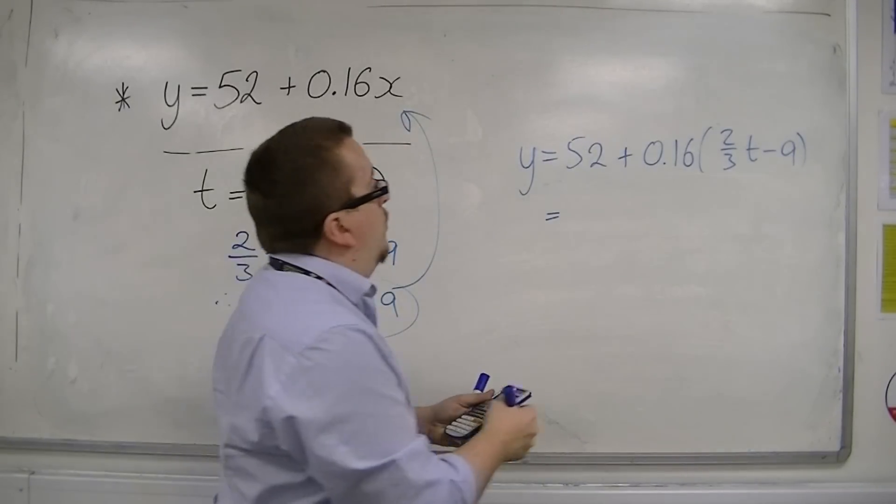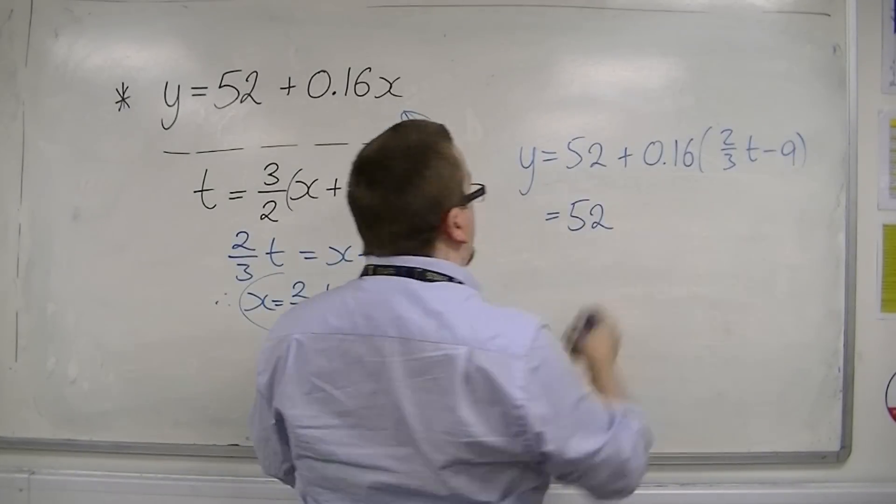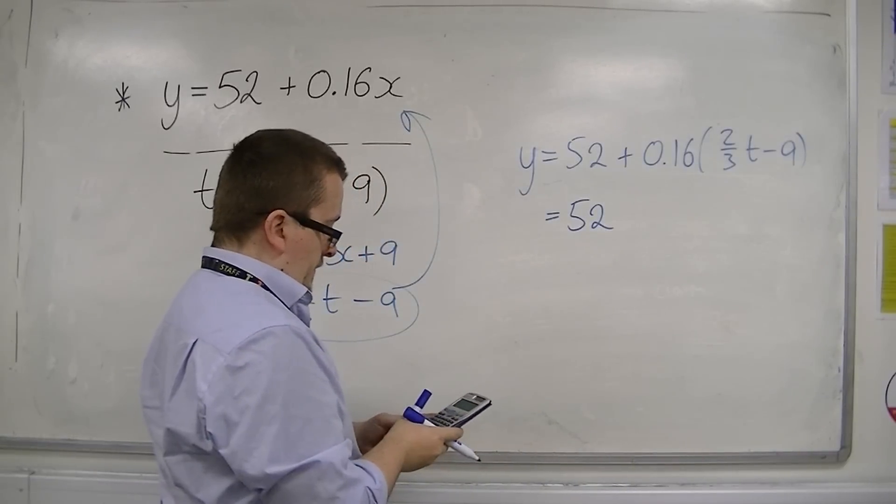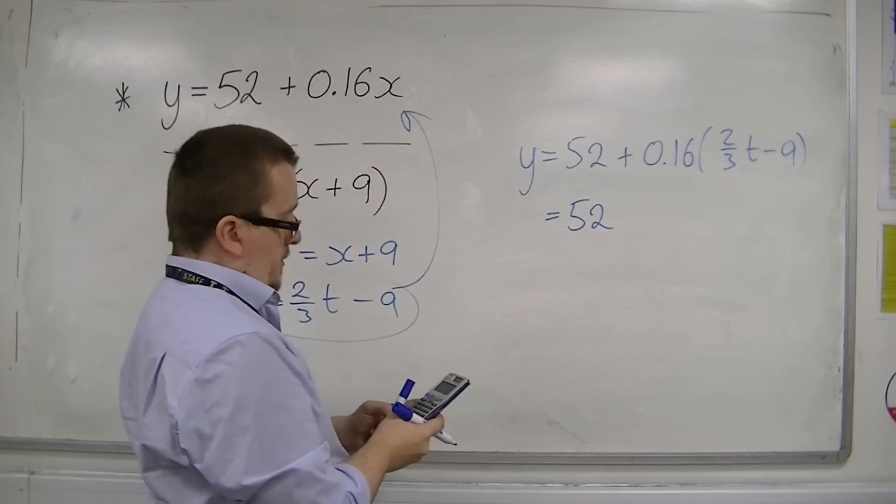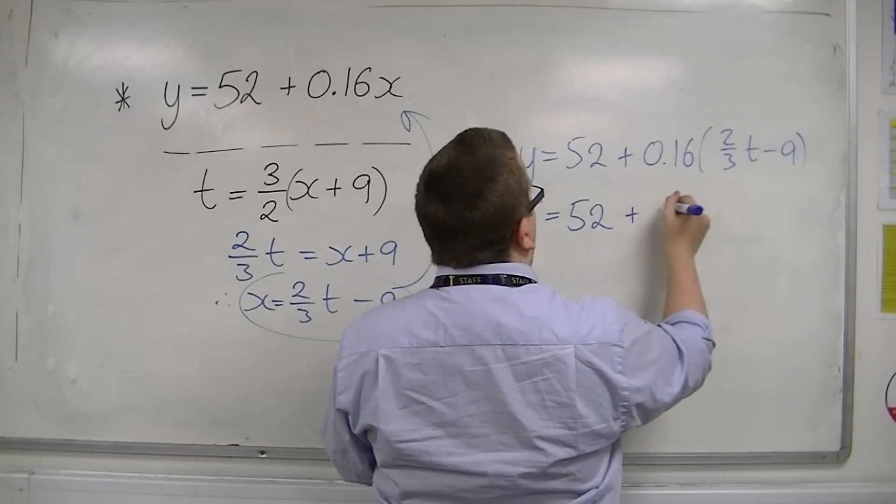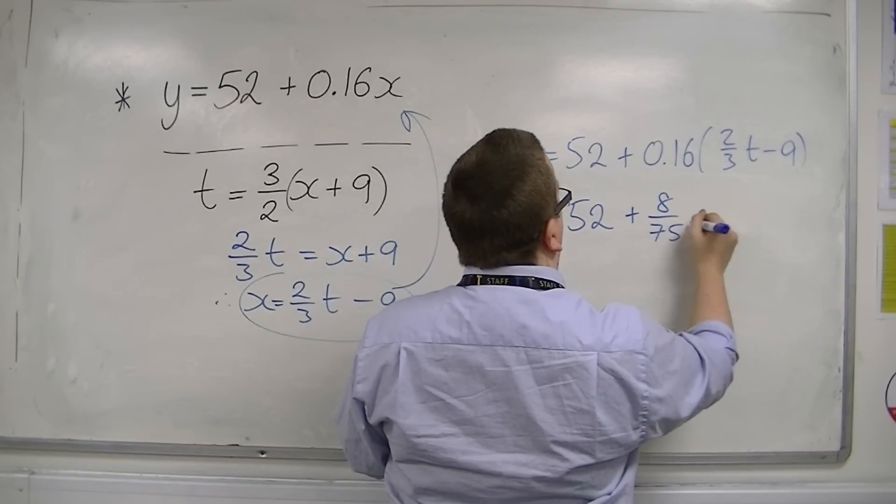So we're going to get 52 plus 0.16 times two thirds is eight seventy-fifths t.